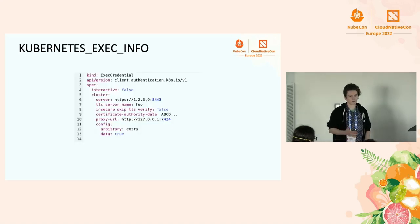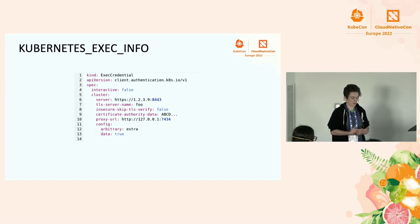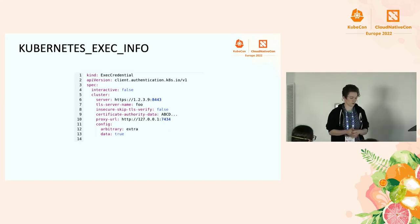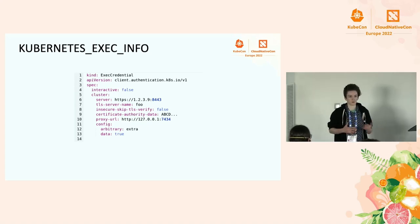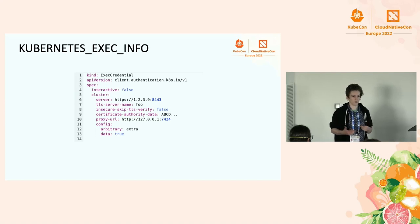Another important part of initialization is the Kubernetes exec info environment variable. When client-go invokes a plugin, it passes data via this variable directly from the kubeconfig, including information about the target cluster. This is useful if your cluster's authenticator is looking for a specific audience based on which cluster is running, so the credential plugin needs that cluster info to craft the token correctly.